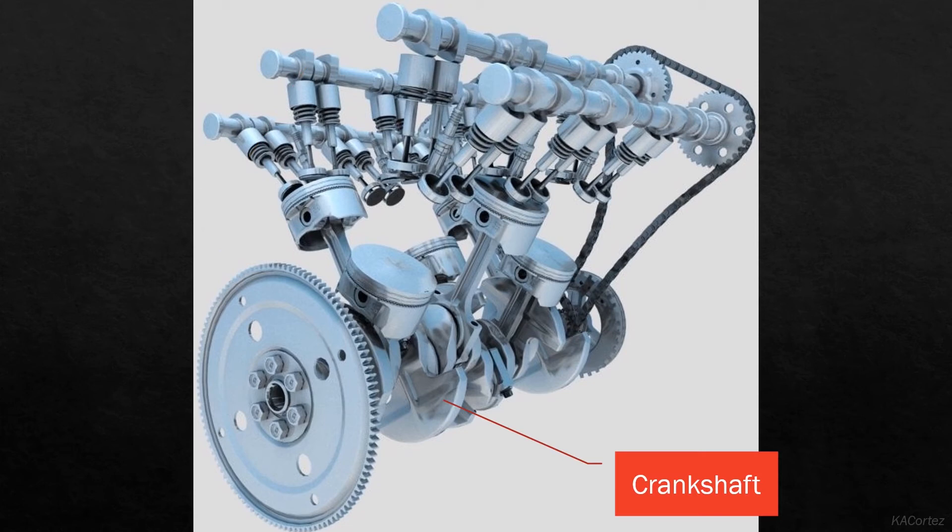The crankshaft is a rotating shaft which converts the reciprocating motion of the pistons to rotational motion. It is commonly used in an internal combustion engine and consists of a series of cranks and crank pins to which the connecting rods are attached.